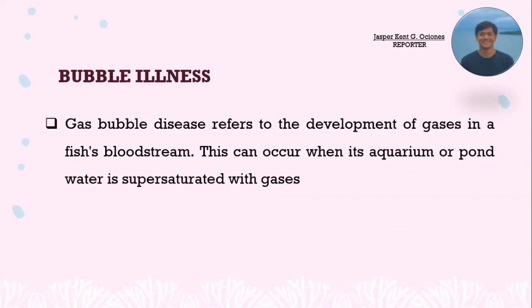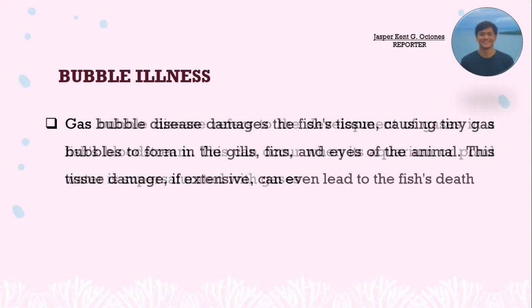Next is gas bubble disease. Gas bubble disease refers to the development of gases in a fish's bloodstream, which can occur when aquarium or pond water is supersaturated with gases. Gas bubble disease damages fish tissues, causing tiny gas bubbles to form in the gills, fins, and eyes of the animal. If extensive, this tissue damage can lead to the fish's death.